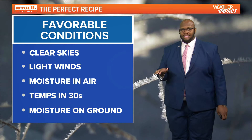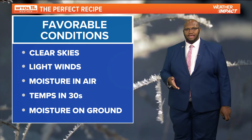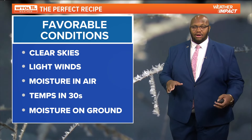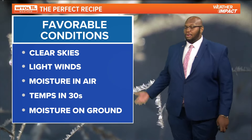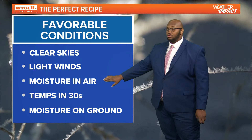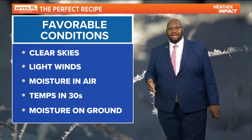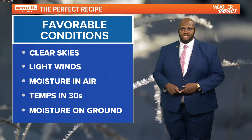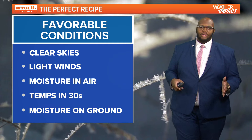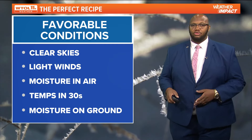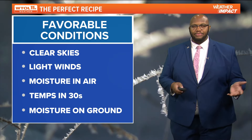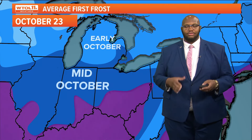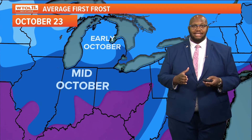If there are strong winds, frost really won't be able to stay — those water molecules won't settle on grass surfaces, plants, or crops. But moisture in the air provides the water droplets that help frost and freeze form on crops and plants, along with temperatures likely in the 30s and moisture on the ground.